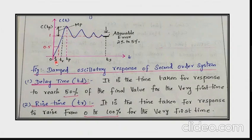The second time domain specification is rise time. Rise time is the time taken by the response to rise from 0 to 100%. The corresponding time period is denoted as Tr.